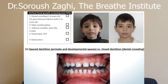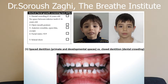The Breathe Institute is referencing a particular paper for this information, so I'm going to link that in the description. The first thing to look out for is spaced dentition. A healthy child will grow their teeth with small spaces between them. If there is no space between the teeth, or worse, dental crowding already, that's a sign of craniofacial abnormalities.